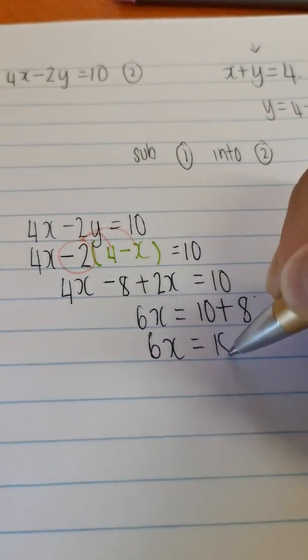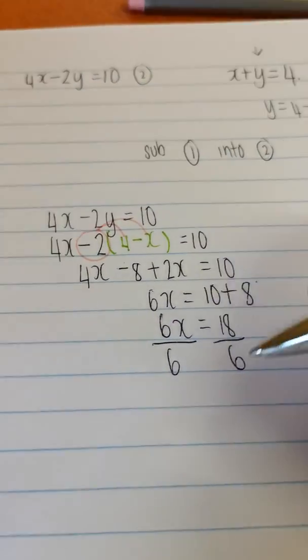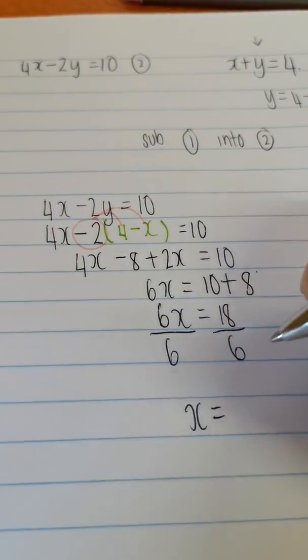6x equals 18. Divide by coefficient of x. Divide by coefficient of x. x equals 3.